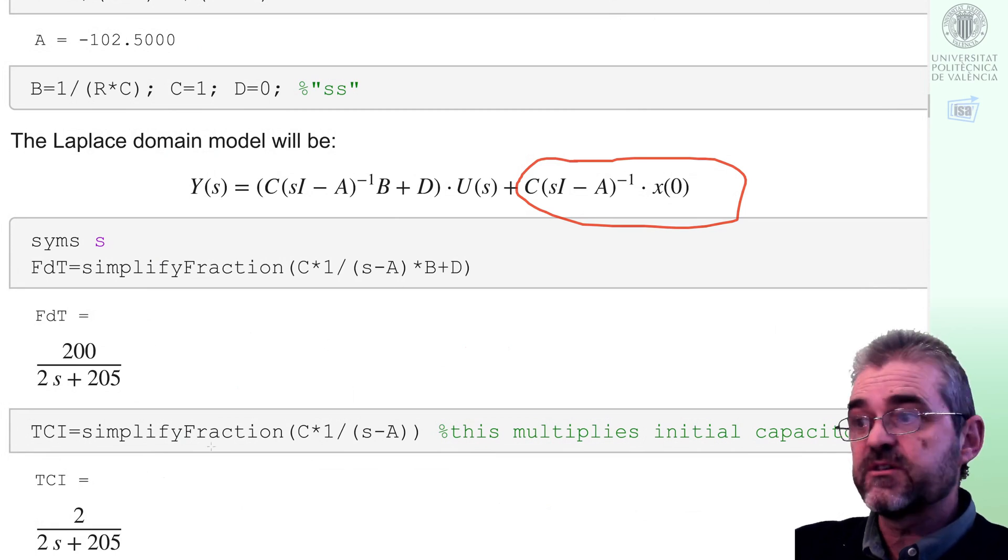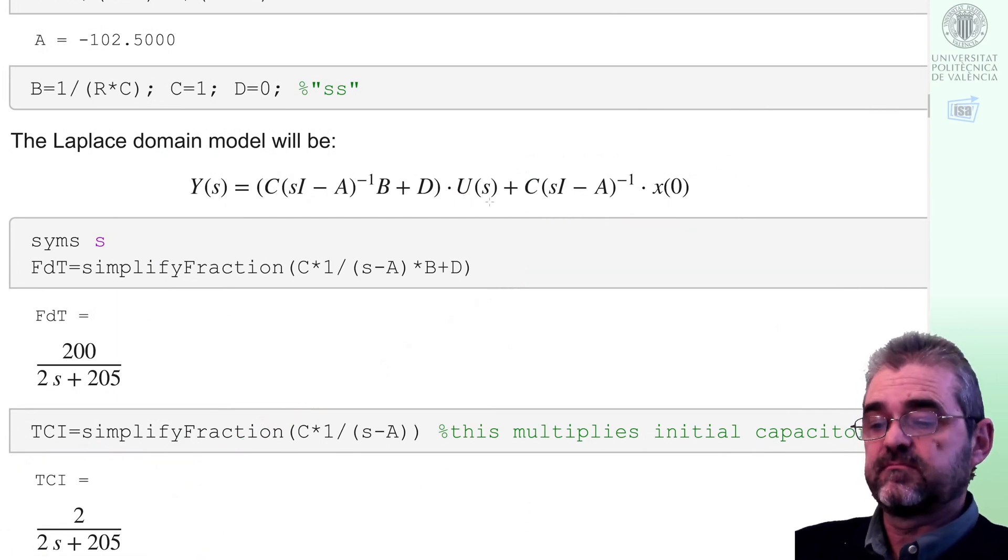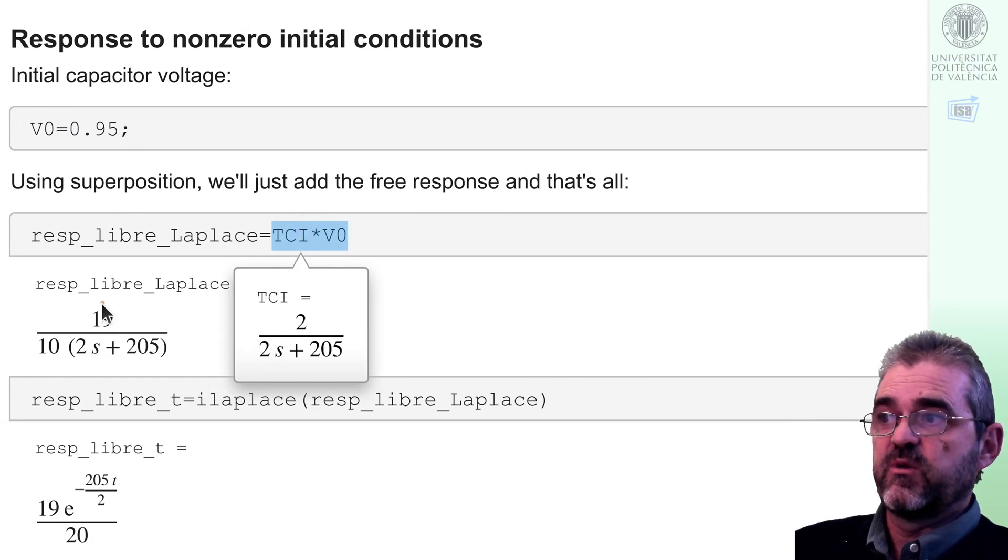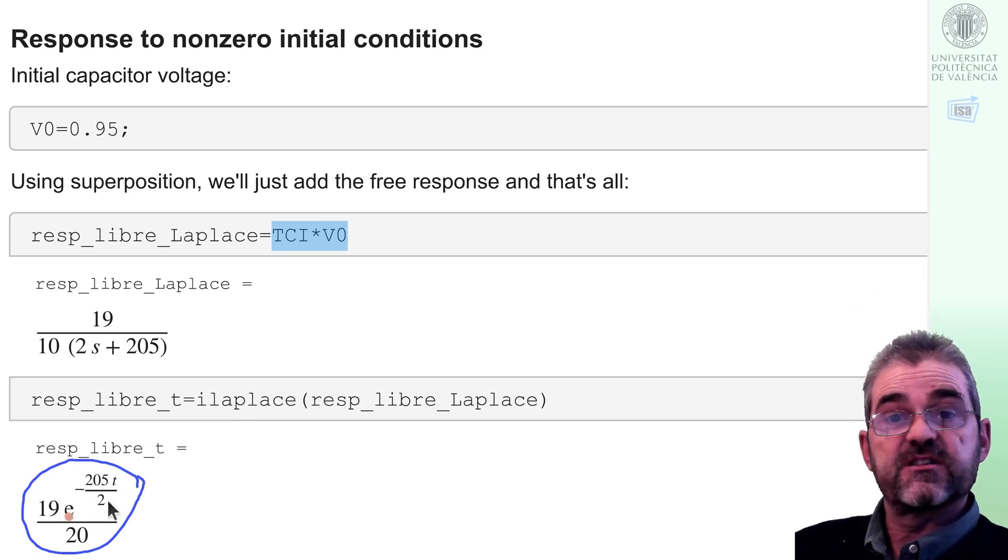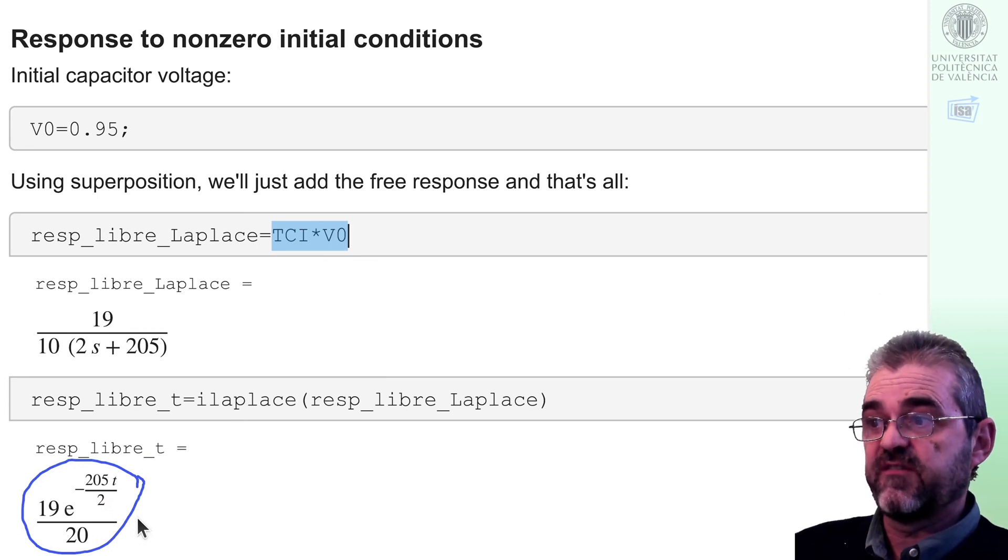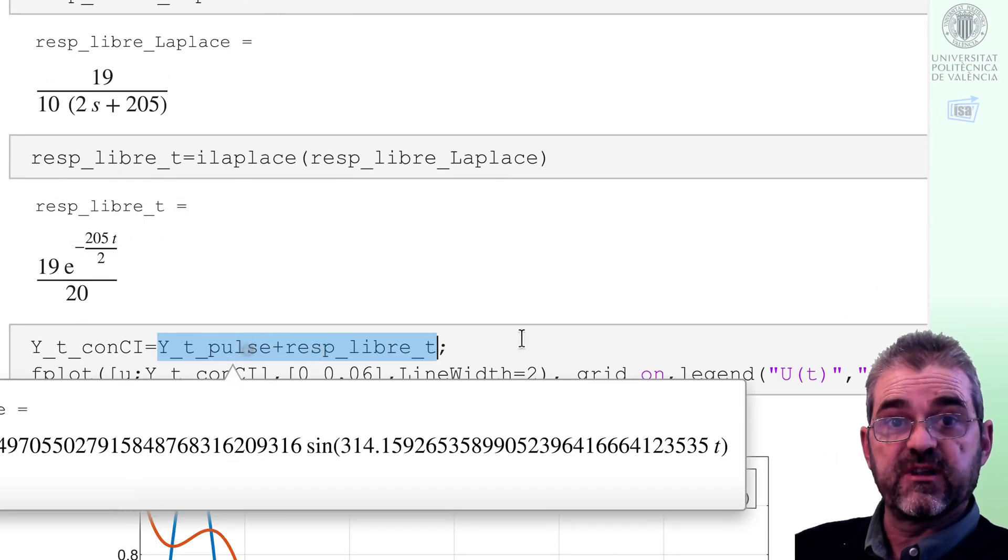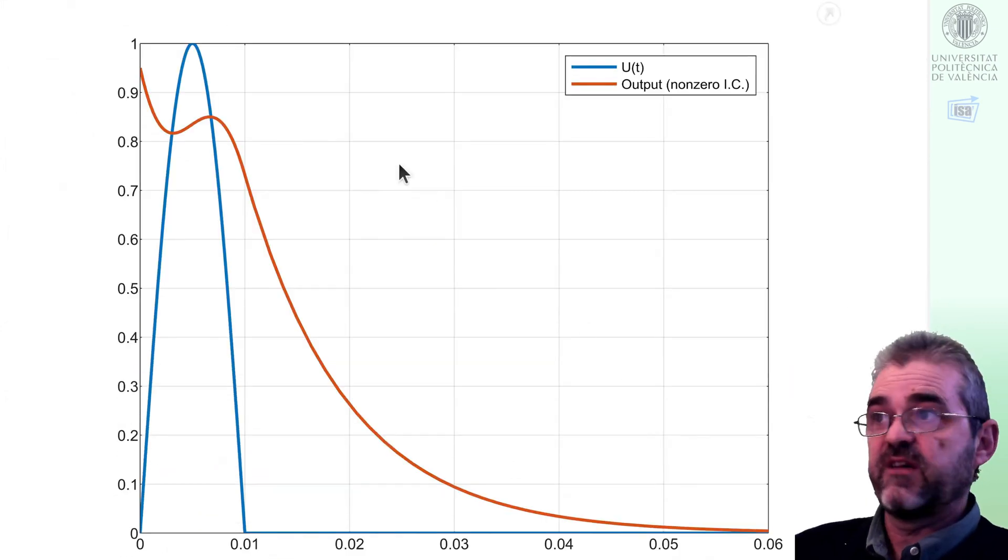If initial conditions were non-zero, I would just need to add this term to the just obtained output. Indeed, for instance with this initial capacitor voltage, that initial condition term will be this thing in the Laplace domain and of course will be this exponential discharge of the capacitor free response in time domain. So if I add this to the previously computed response to the pulse, then I get the response with non-zero initial conditions. Here we have it, in which we start at 0.95. So again we applied superposition to add the effect of non-zero initial charge.